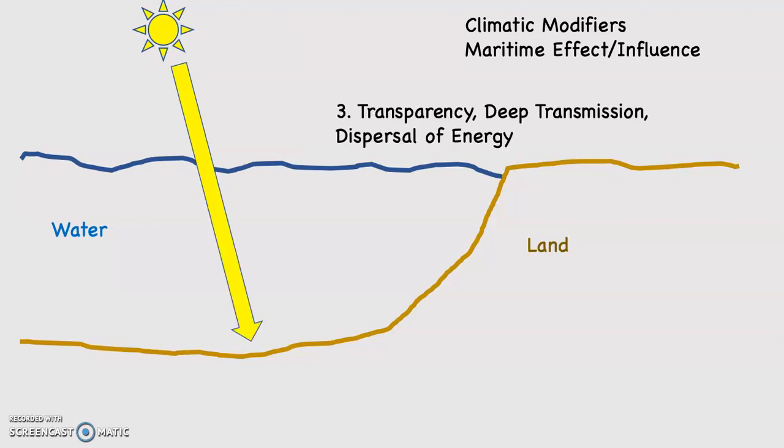Number three: the ocean is transparent. I mean, you look at it, you can see through it. If you can see through it, the sun can see through it. Because of that, there's deep transmission of the sun's rays, maybe 200 or 300 feet down in some cases. As a result, the sun's energy is able to heat water molecules the entire depth it's going down, which is a vast dispersal of energy. You're spreading the sun's energy out over a large area because of that transparency.